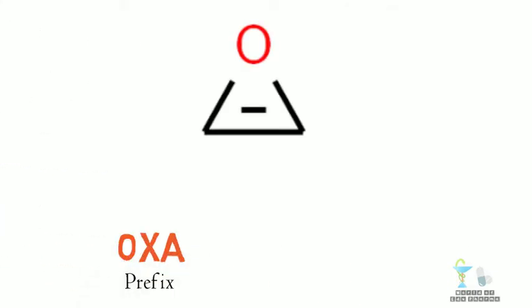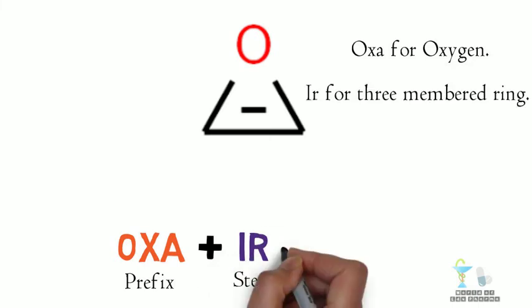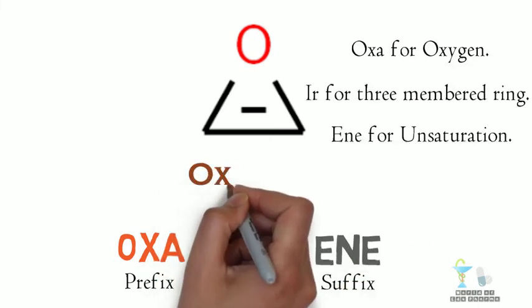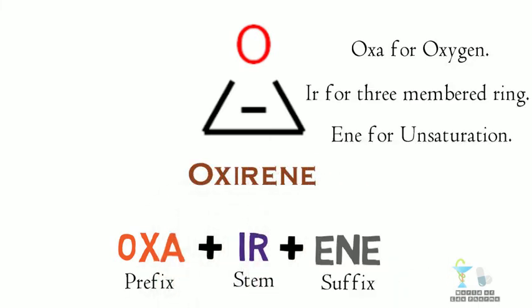In this, OXA plus IR plus unsaturated ring so INE is used. Finally OXIRINE.